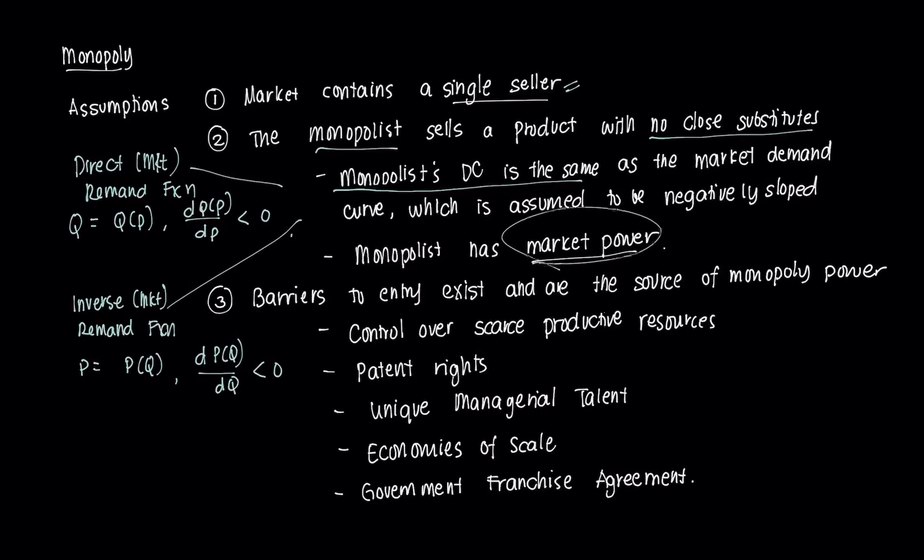The monopolist has some sort of power in setting prices or output, which is something that a perfectly competitive firm could not do because they had to take the market price as given. Their individual demand curves were essentially horizontal lines reflecting the market price. In a monopoly, the reason why a monopolist has some sort of power is because there are barriers to entry, and those barriers to entry prevent other firms from entering the industry. In a perfectly competitive market, firms could enter and exit. In a monopoly, it's not so easy — effectively it's quite impossible. These barriers to entry are the source of monopoly power.